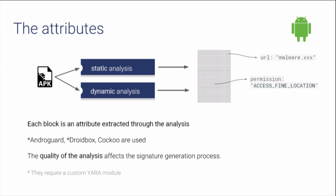To have a graphical representation, each feature could be a small square within the gray grids you can see in the slides. It could be, for example, a permission, an intent filter, or something else. It's very important that the analysis is performed carefully, because through the analysis we extract the attributes. Having good attributes is the key to having a good signature.